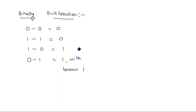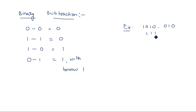Binary subtraction is somewhat different and not that easy — you have to work with borrows. For example, subtracting 1 1 1 dot 1 from 1 0 1 0 dot 0 1 0. Starting from the rightmost digit: 0 minus 1 gives result 1 with a borrow of 1.